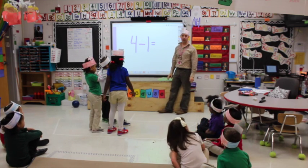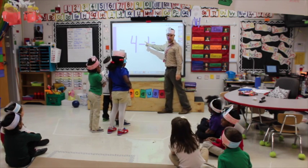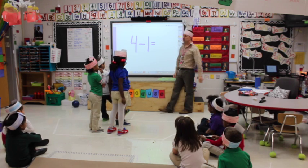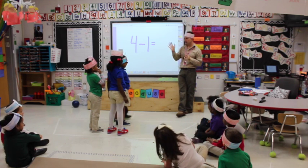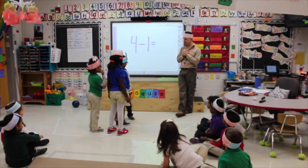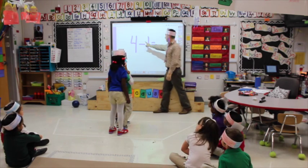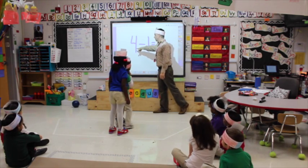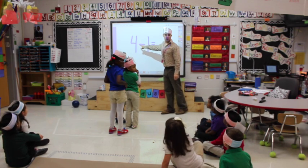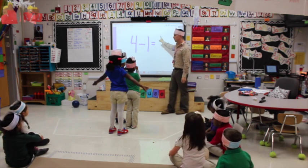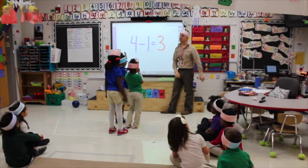Four minus one equals... One gets off. One, two, three. Four minus one equals three. How many people are on my boat? Three. Very good, thank you.